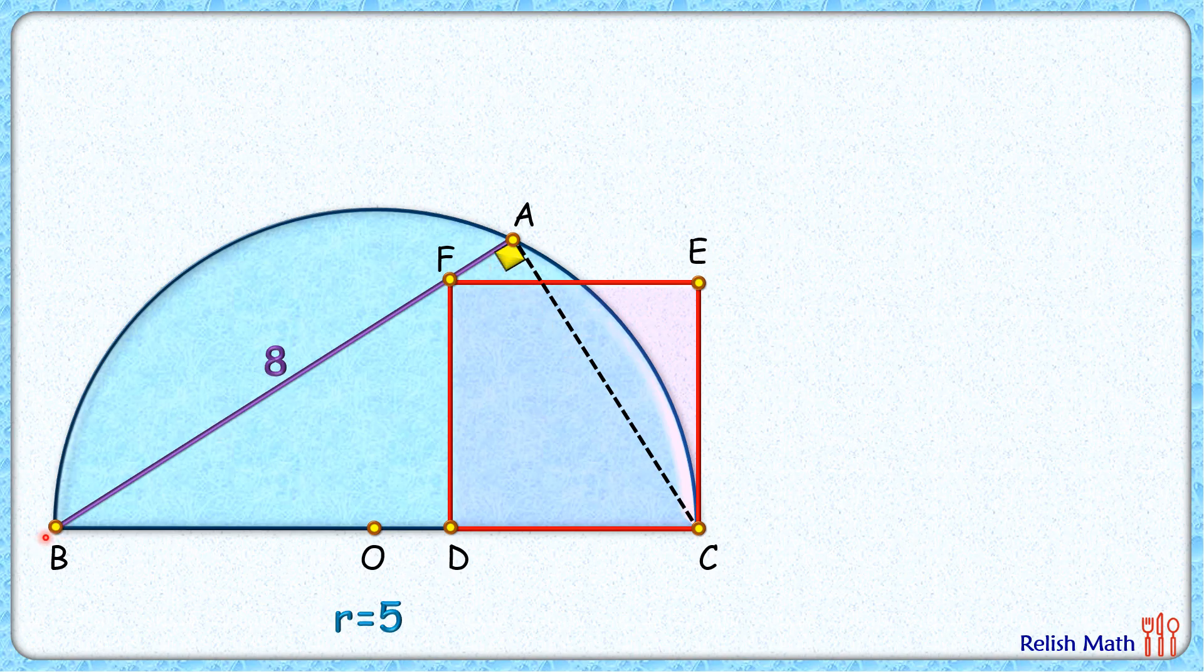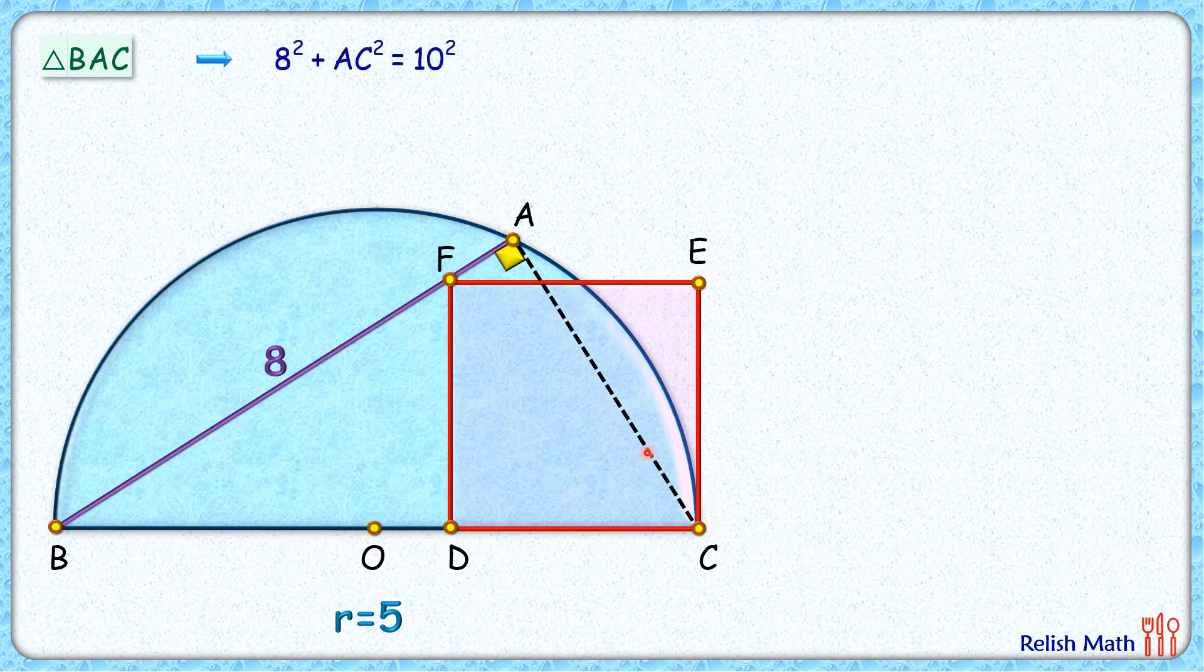Now this triangle BAC is a right angle triangle, and for all right angle triangles we complete the sides by using Pythagoras theorem. Here, BC is hypotenuse which is twice of 5, or 10 cm. So for triangle BAC, let's apply Pythagoras theorem and solve it to get value of AC squared as 36, or AC as 6 cm.